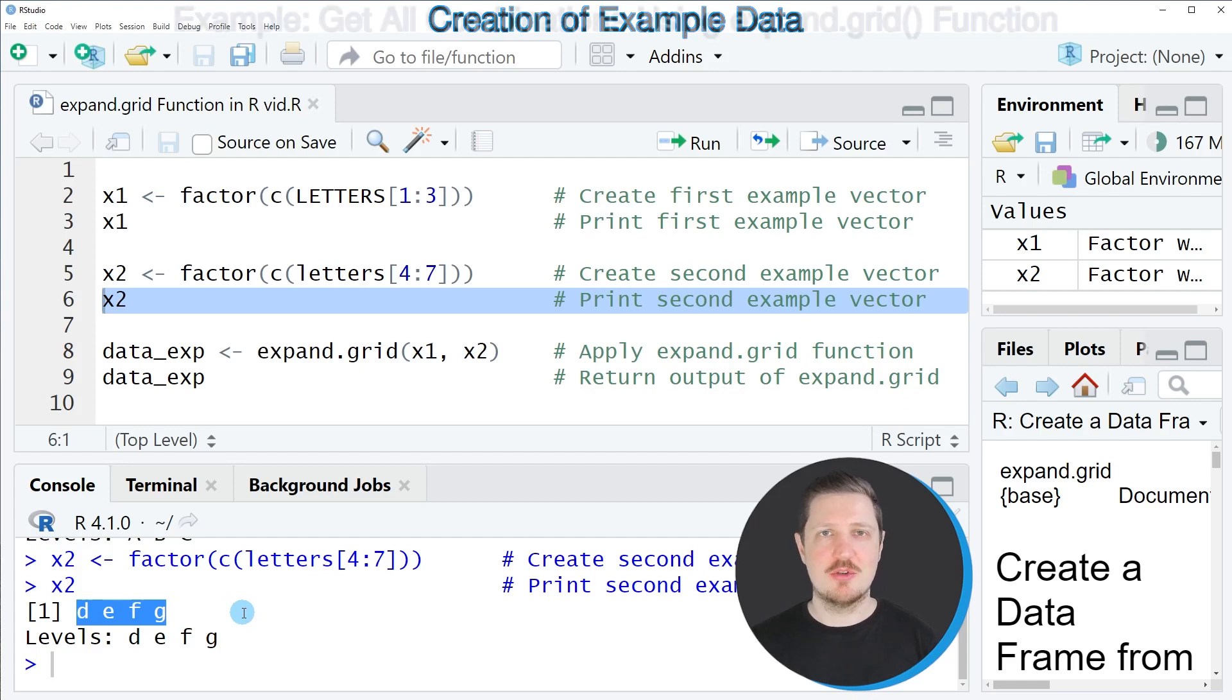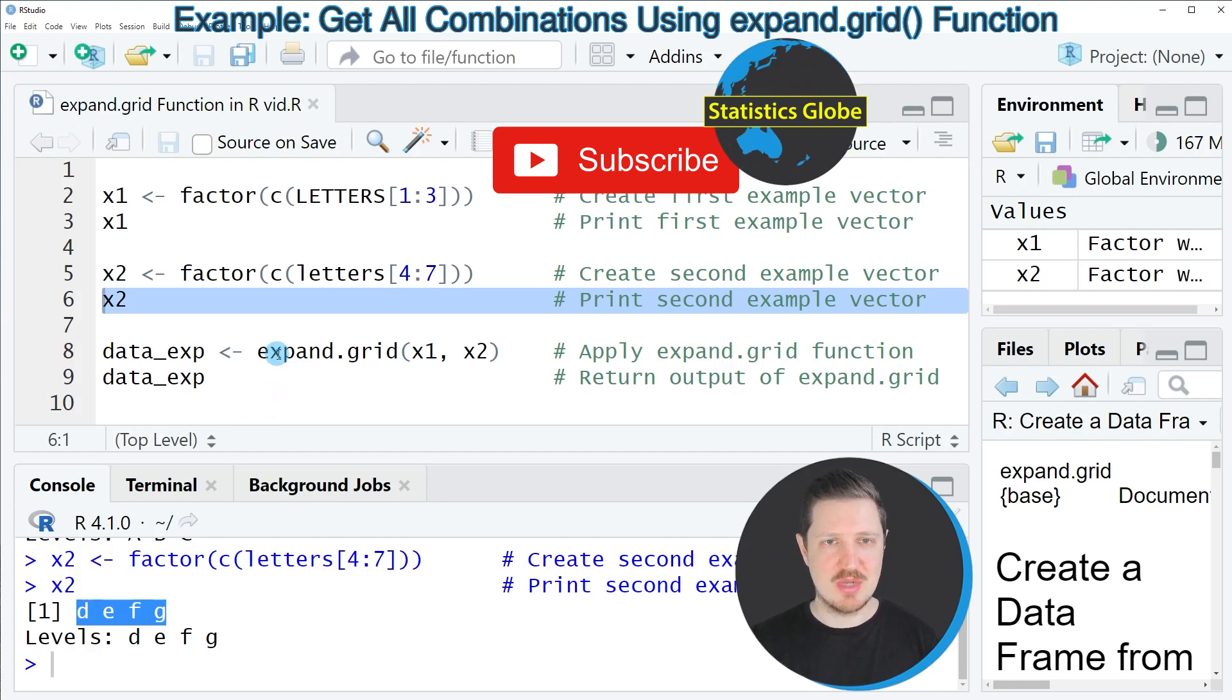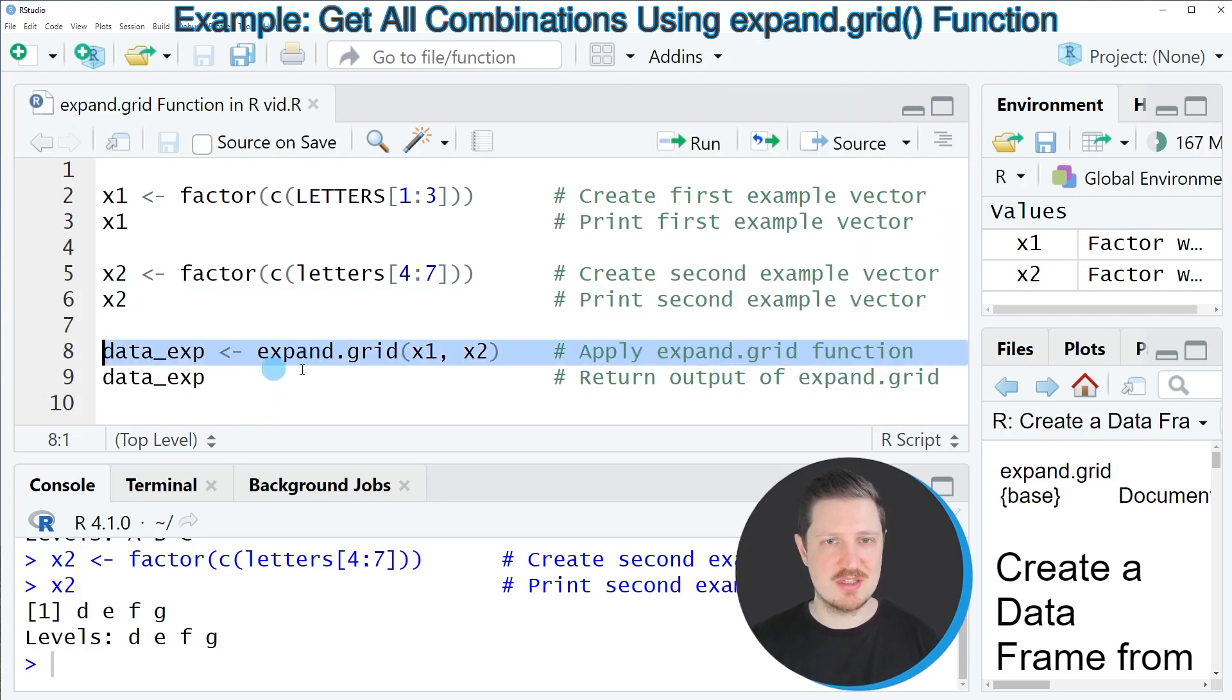Now let's assume that we want to return a data set which contains all possible combinations of the vectors x1 and x2. Then we can apply the expand.grid function as you can see in line 8 of the code, and within the expand.grid function we simply need to specify our two vector objects. So in this case these vectors are called x1 and x2 and they are separated by a comma.